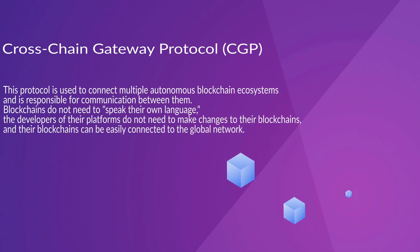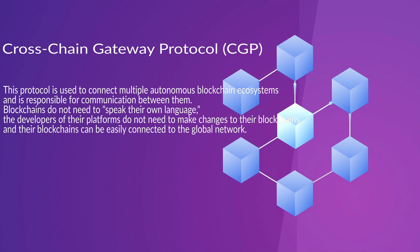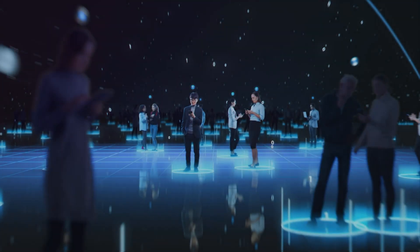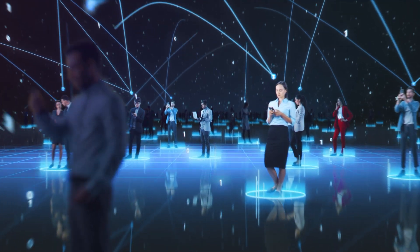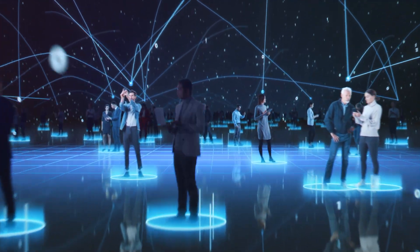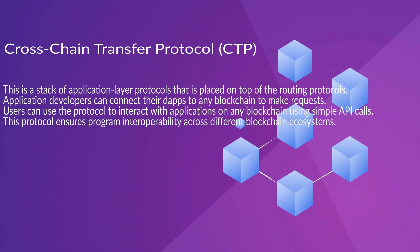Crosschain Gateway Protocol: This protocol is used to connect multiple anonymous blockchain ecosystems and is responsible for communication between them. Blockchains do not need to speak their own language, the developers of their platforms do not need to make changes to their blockchains, and their blockchains can be easily connected to the global network.